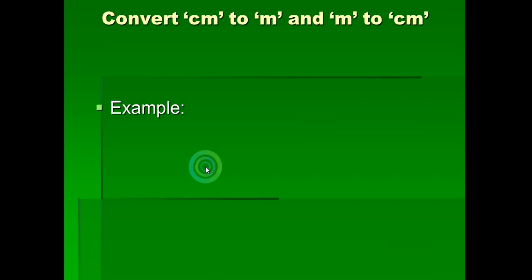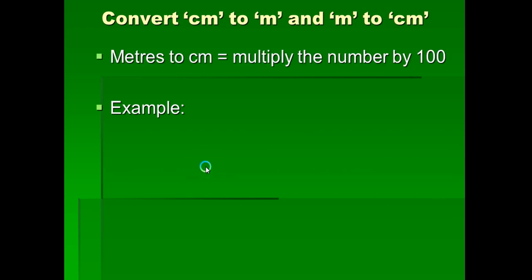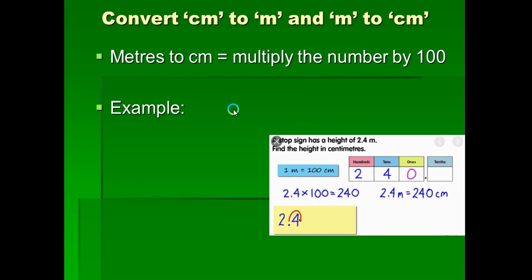Let's go to how to convert centimeters to meters and meters to centimeters. To convert meters to centimeters, you multiply by 100. Here is an example: a stop sign has a height of 2.4 meters. Find the height in centimeters. We multiply 2.4 by 100, which gives us 240 centimeters.